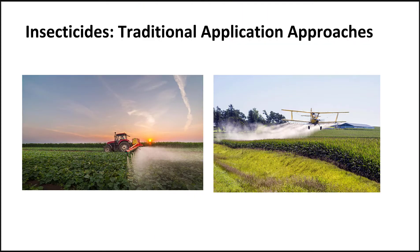Traditional application approaches for pesticides include spraying from the ground level, and increasingly popular is spraying from the air. One disadvantage of spraying large areas using this equipment is drift of the chemical on a windy day. Drones are coming into wide use in precision agriculture. Drones can target very precise areas to spray pesticides only where they are needed, instead of blanketing an entire field. Drones help farmers by using less pesticide, saving the farmer money, and potentially producing less drift of the chemical.